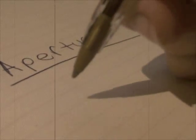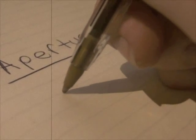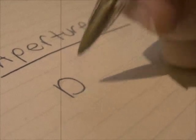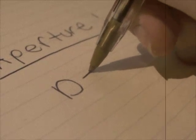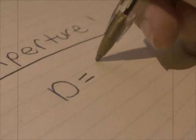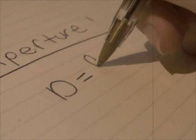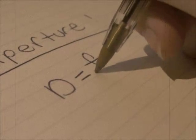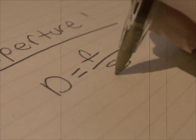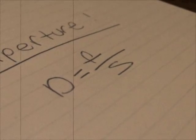Aperture is measured in f over stop numbers. The equation for aperture is d equals f over s — d representing the diameter of the shutter, which is what we're looking for; f representing focal length; and s representing the stop number. A stop number is an adjustment in aperture, or the diameter of the shutter, marked with a number. Stop numbers are in increments of powers of the square root of 2, and f-stop numbers are rounded off for convenience. To find your aperture, you plug in your focal length in millimeters and your f-stop number.